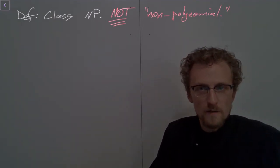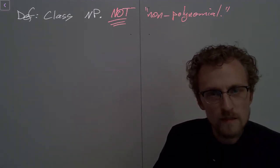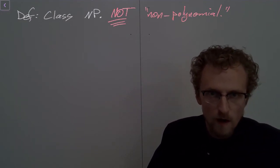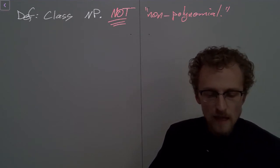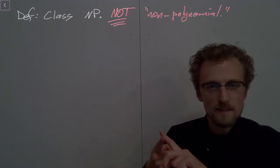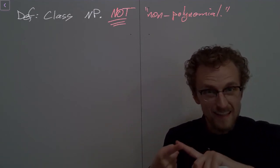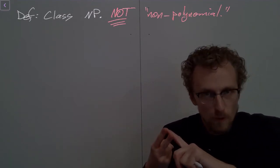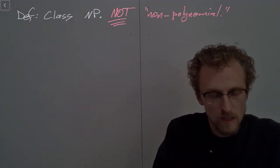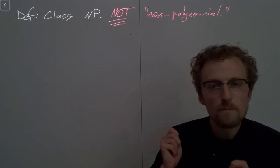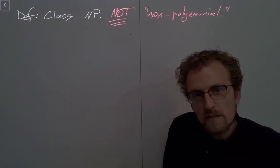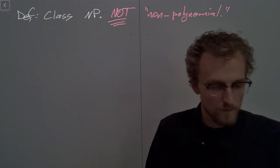So I'm not going to focus on what non-deterministic means, but here's a definition of NP that will work for our purposes. Class NP is the class of all decision problems such that if an instance has a yes answer — if it is a yes instance — then that instance has a proof, some kind of a certificate, some kind of a proof that can be verified in polynomial time, where that proof can show us that it is a yes instance.